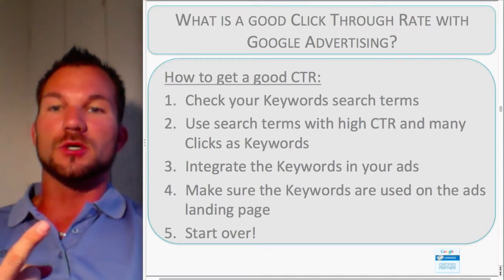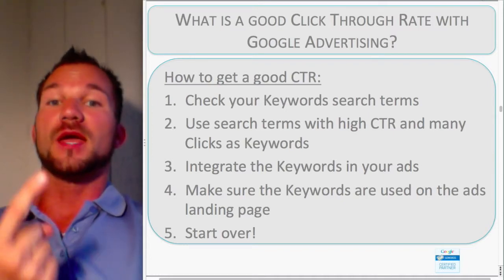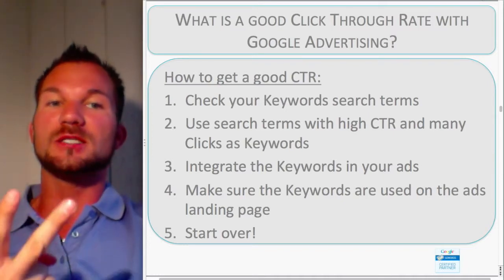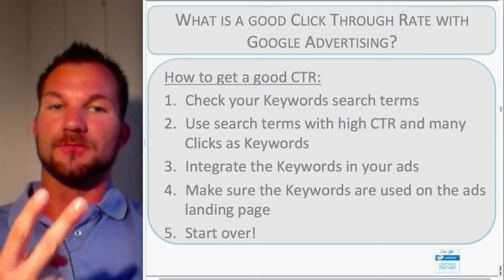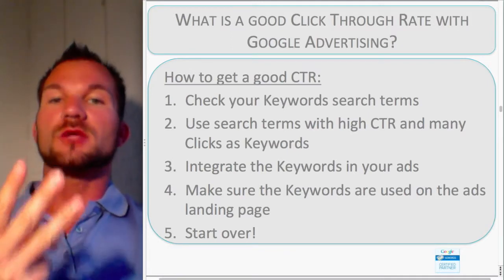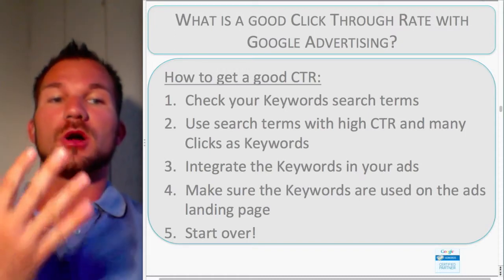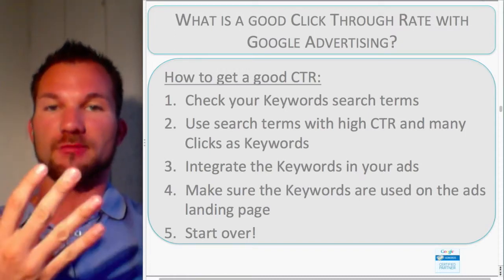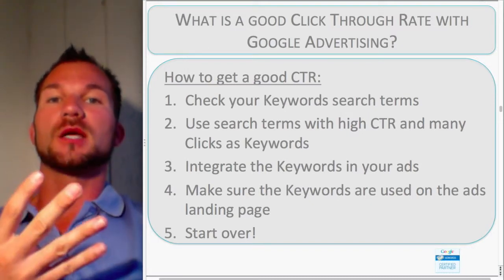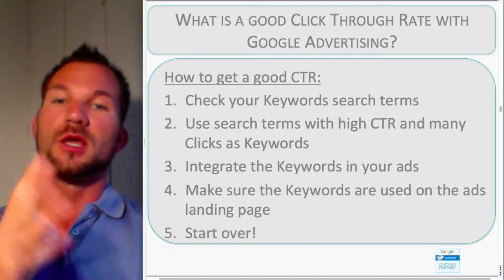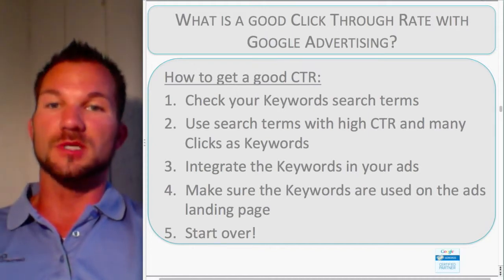Check your keyword search terms. Log into your account and check the search terms, then pick the good search terms that have a high CTR and many clicks, and use them as your keywords. Integrate the keywords in your advertisements and make sure the keywords are used on the landing page of your advertisements. This is very important. All you have to do to optimize your account is start over and over again with these simple five steps.